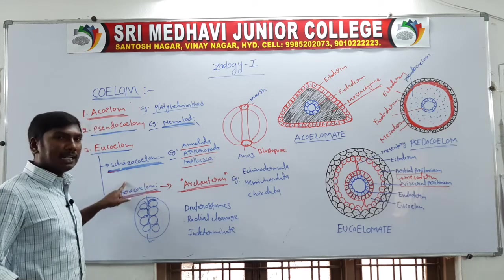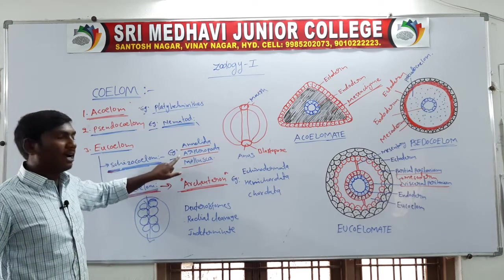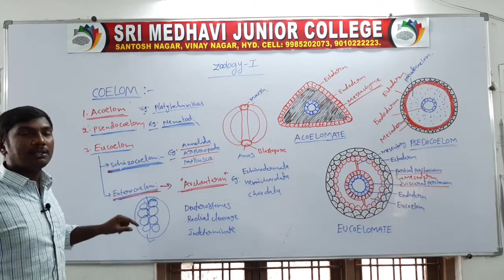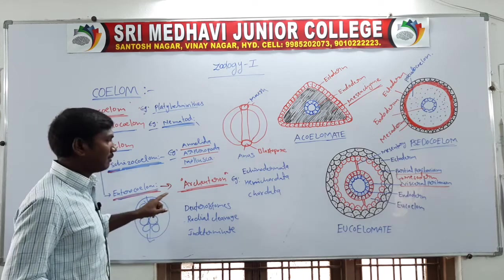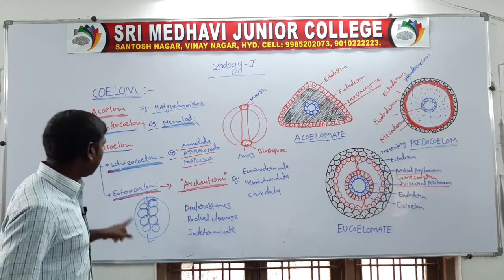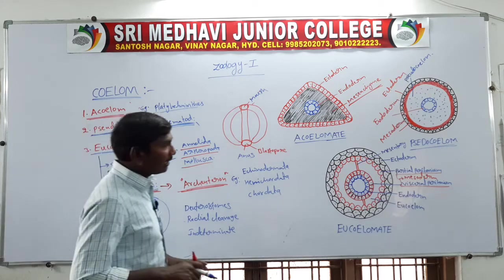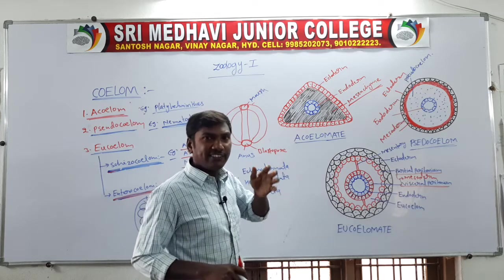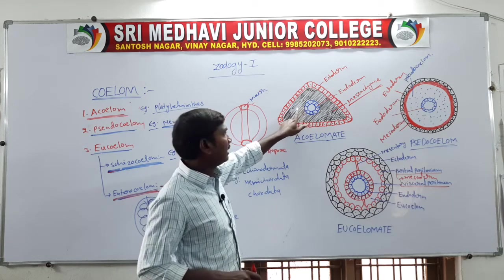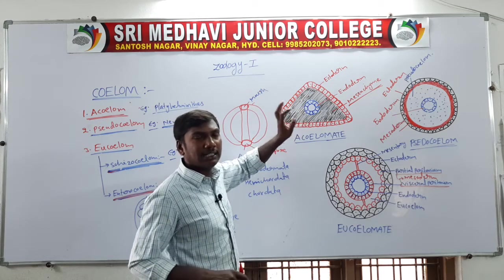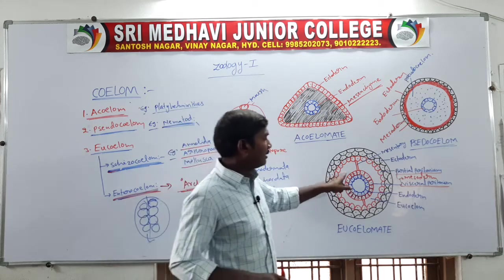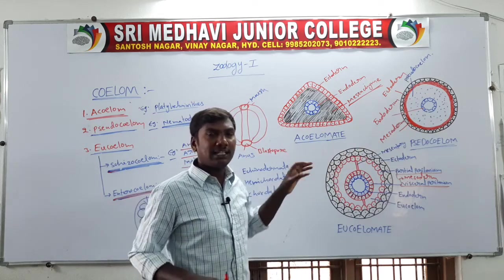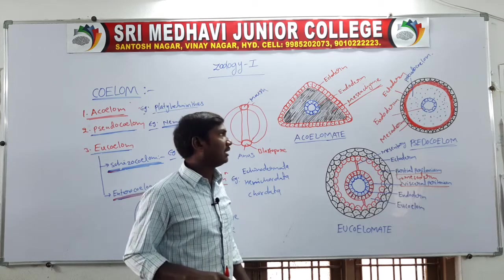Schizocoelom example: Annelida, Arthropoda, Mollusca. Enterocoelom example: Echinodermata, Hemichordata, Chordata. Retroperitoneal organs are covered by parietal peritoneum only on the ventral side; example is the mammalian kidney. In acoelomates, organs cannot move freely as the body is solid. In coelomates and pseudocoelomates, the fluid space allows visceral organs to move freely.